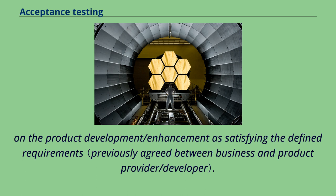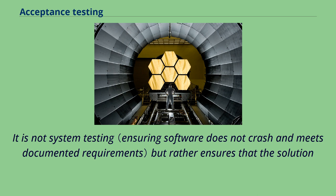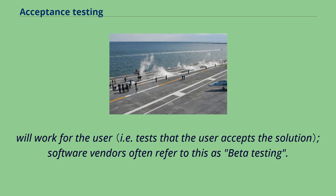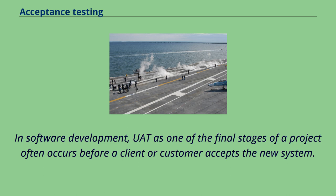User acceptance testing consists of a process of verifying that a solution works for the user. It is not system testing, but rather ensures that the solution will work for the user. Software vendors often refer to this as beta testing. This testing should be undertaken by a subject matter expert, preferably the owner or client of the solution under test, and provide a summary of the findings for confirmation to proceed after trial or review. In software development, it is one of the final stages of a project and often occurs before a client or customer accepts the new system.